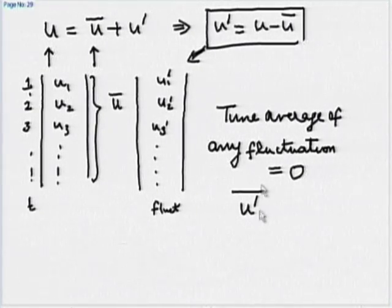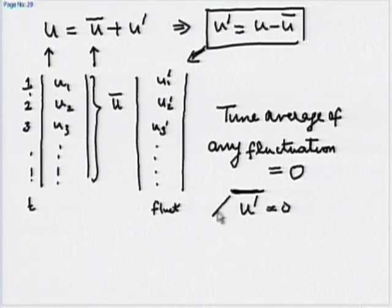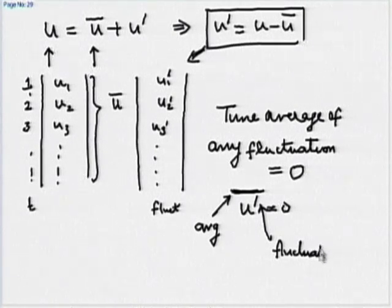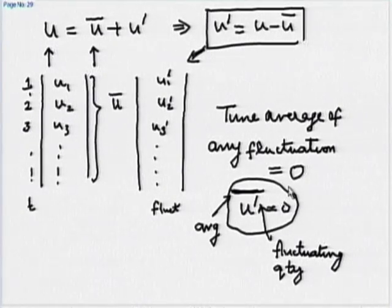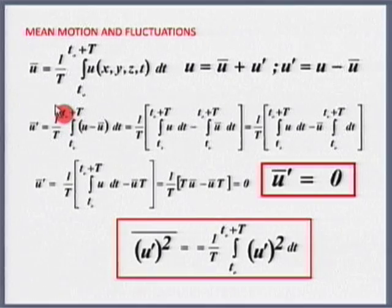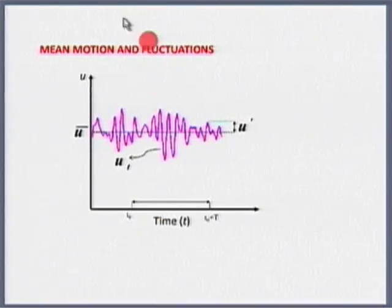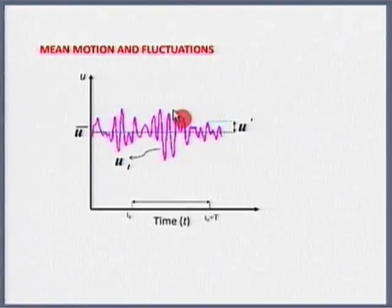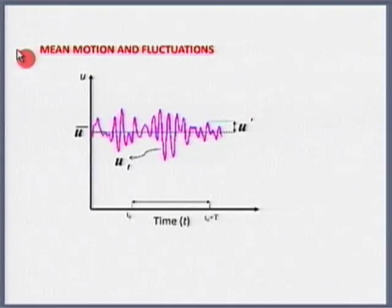The bar represents average and the prime represents the fluctuating quantity. Time average of any fluctuating quantity is equal to zero - very good. That was quite easy to understand: the positive side fluctuations summation would be equal to the negative side fluctuation summation and it adds up to zero.